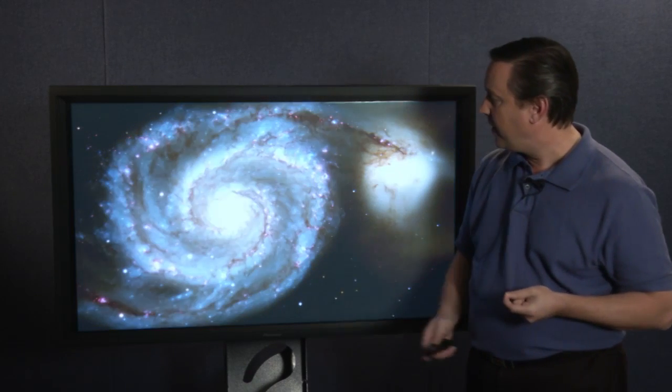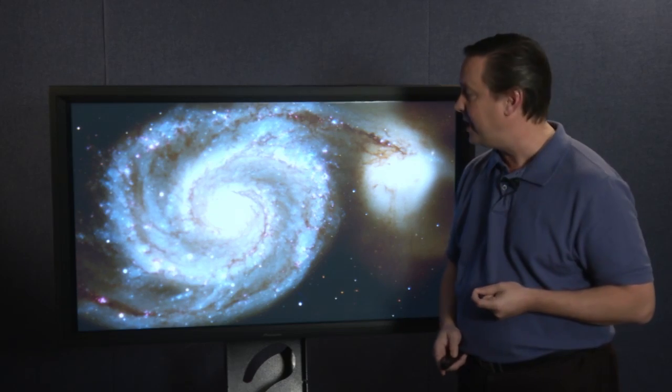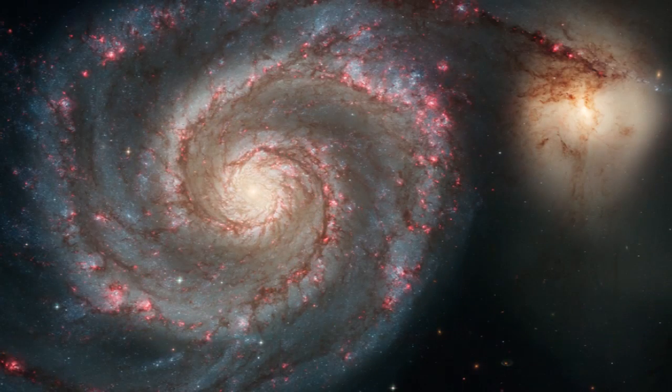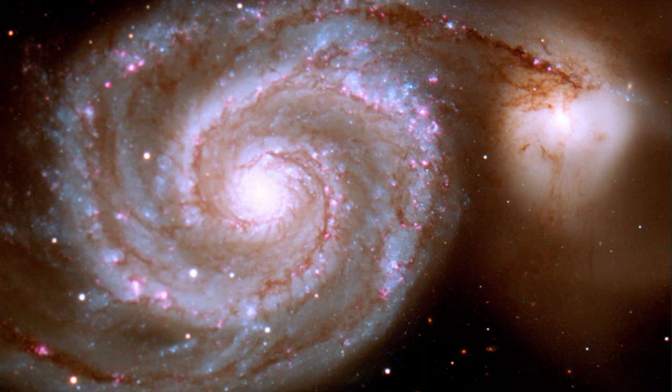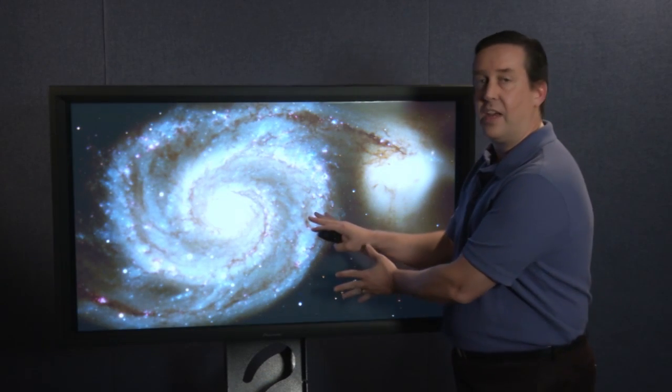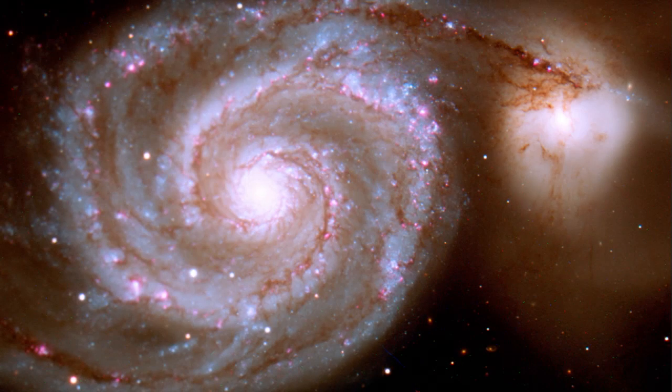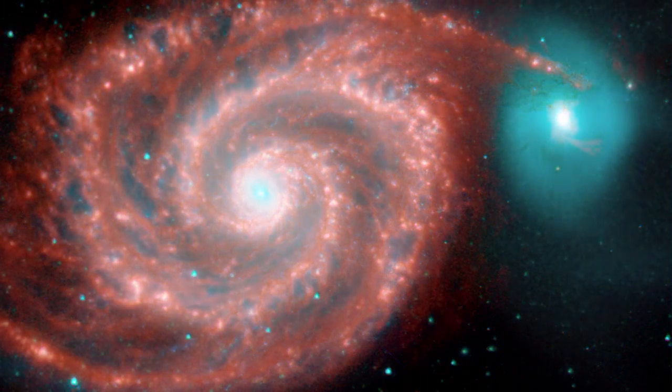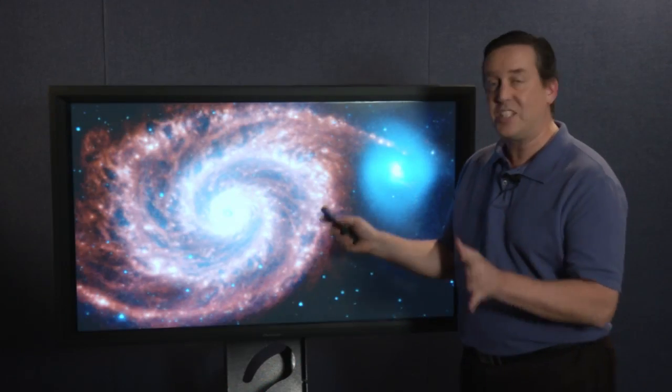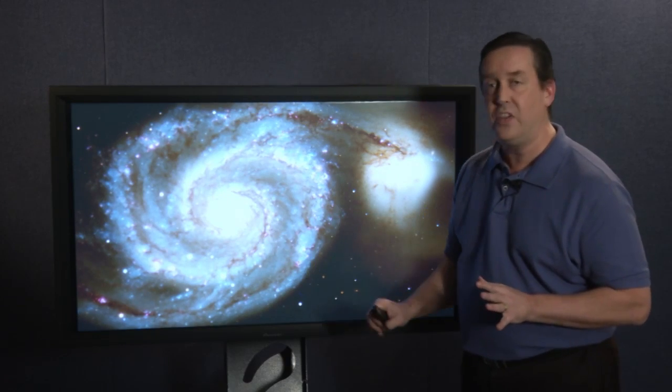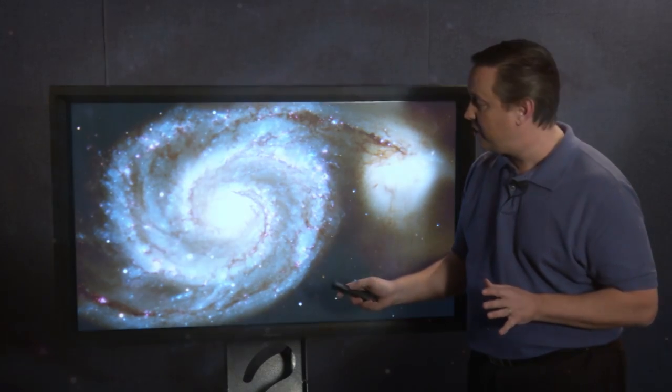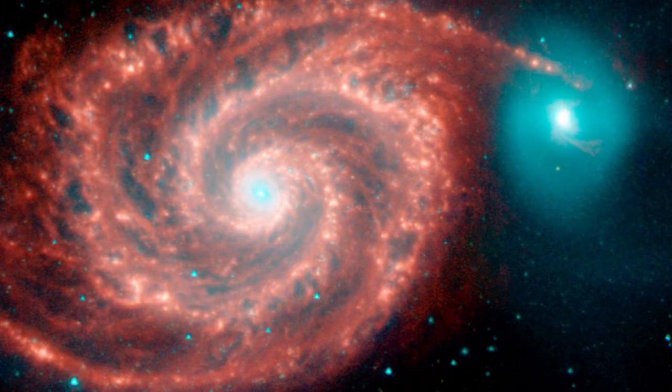If I showed you a ground-based image of the Whirlpool Galaxy, well, it doesn't have anywhere near the same detail. This is Hubble, and this is ground-based. So you can see what Hubble's main advantage is. But if we take this image and compare it to Spitzer's image, well, you can see the bright regions here. Here we see in visible light, and here's what Spitzer sees. The bright regions that Spitzer sees are actually dark in the visible. So here's the visible, infrared. Visible and infrared.